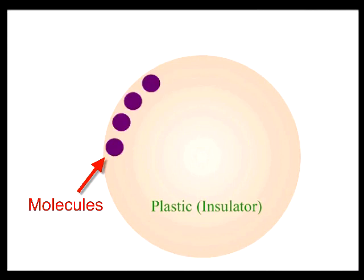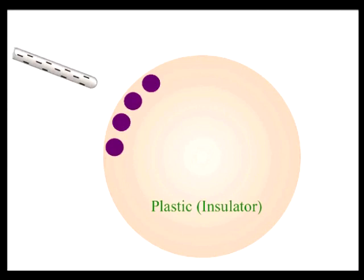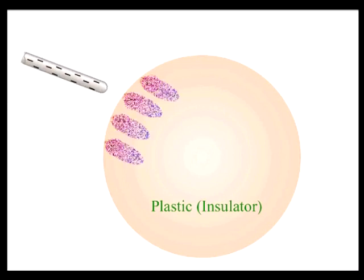The electric force would cause the positive and negative charges in the molecules of the material to separate slightly, with the negative charges being pushed away from the negative rod. Although no net charge is created, the surface of the plastic does acquire a slight induced positive charge and is attracted to the negative rod.